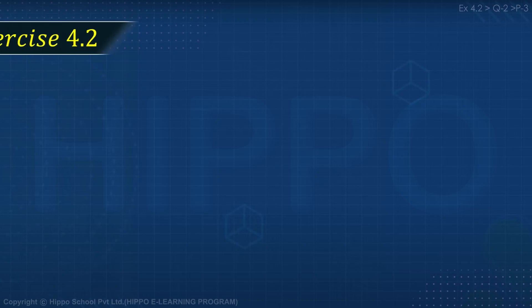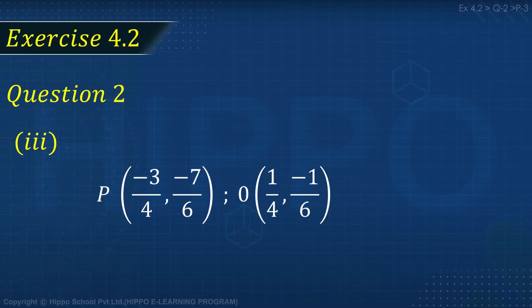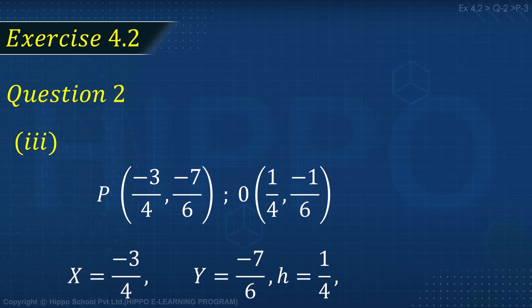Exercise 4.2, Question 2, Part 3. Points P is at (minus 3 by 4, minus 7 by 6) and O' is at (minus 1 by 4, minus 1 by 6). Here on the points we have capital X equal to minus 3 by 4, capital Y equal to minus 7 by 6, H equal to 1 by 4, and K equal to minus 1 by 6.